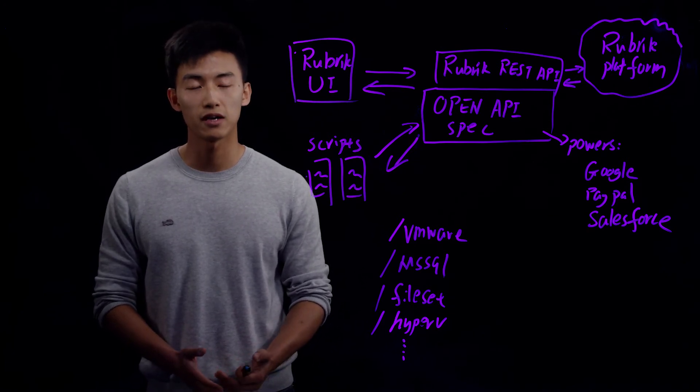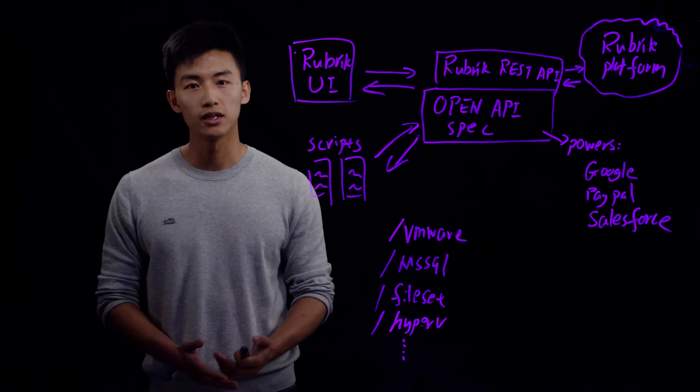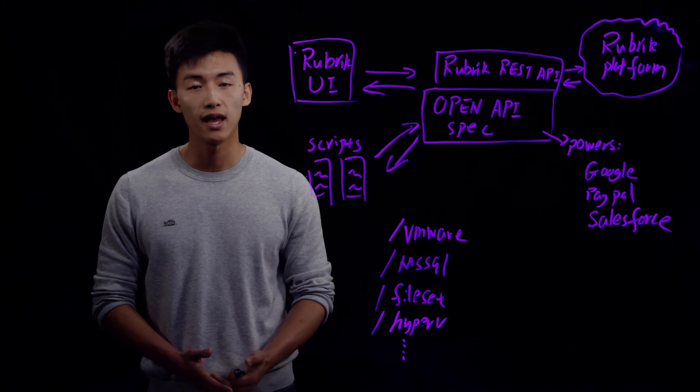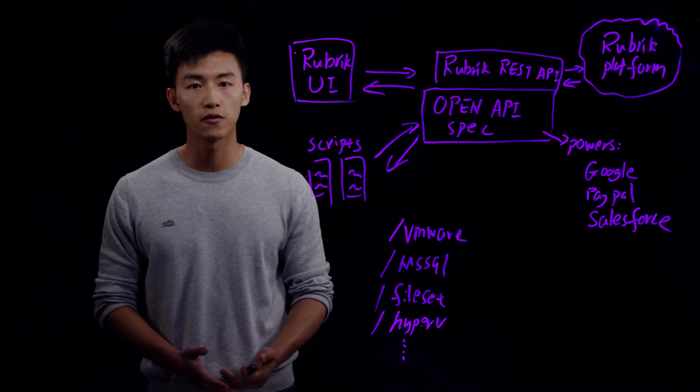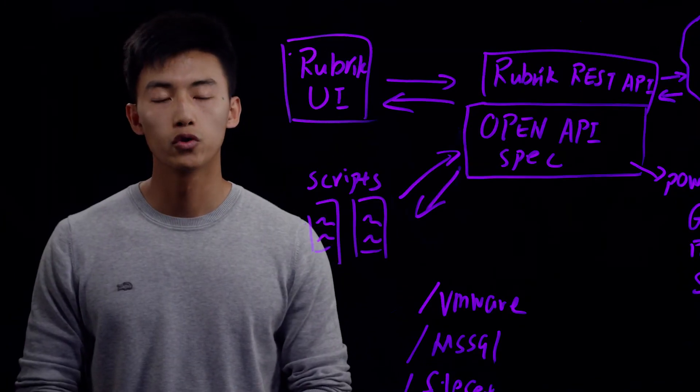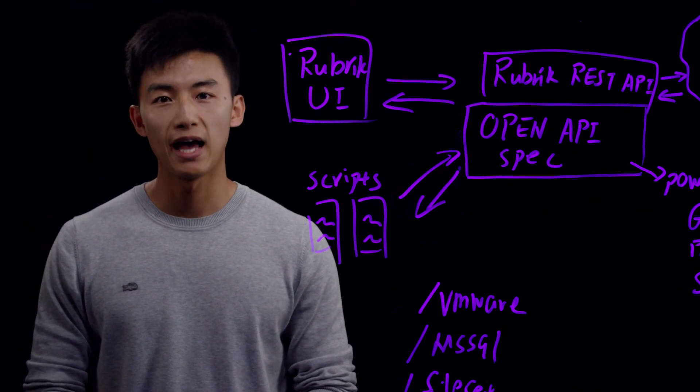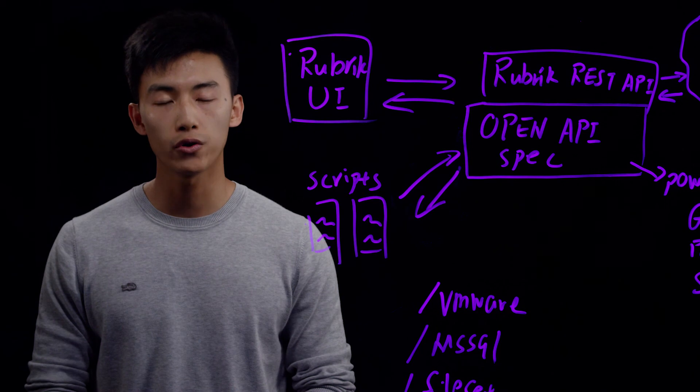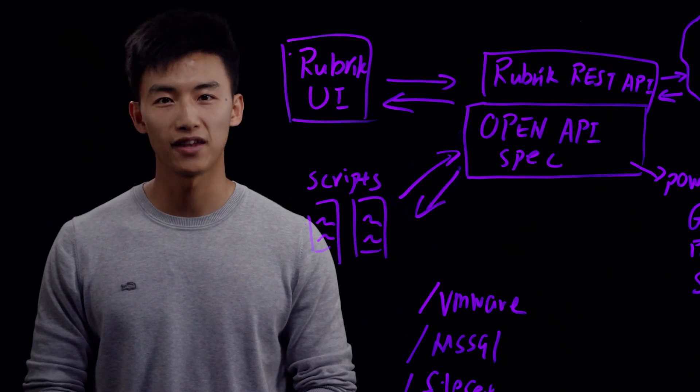Our customers have already created interesting usage of our REST endpoints. They have built customized dashboards and analytics tools on top of REST API. In short, Rubric REST API allows you to build highly customized automation scripts to fulfill all your data management needs. Thank you.